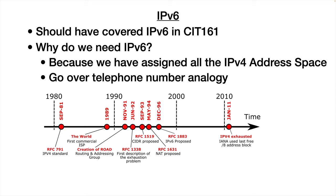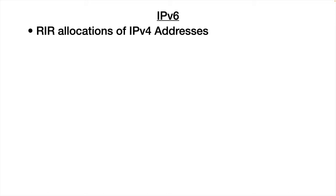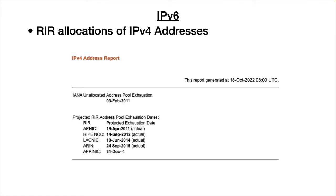They declared that IP version 4 was exhausted in 2011. What that means is all the slash-A address blocks have been assigned by IANA out to the regional registries. An address report from October 18th, 2022 shows that every registry has given out their blocks of IP version 4 address space, with the exception of Africa, which is not anticipated to run out until 2031.